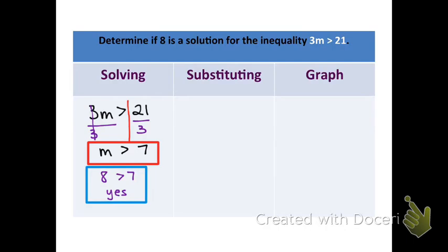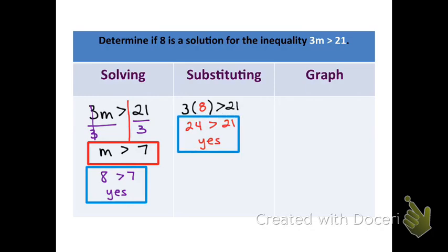The second way is substituting the value 8 directly into the original inequality: 3 times 8 is 24 — is 24 greater than 21? Yes, it is. Both methods give the same answer, which confirms they should. To graph, draw the line with two hash marks at 0 and 7. Since it's greater than, use an open circle at 7 with the arrow heading right. The value 8 falls in the shaded region, confirming it's correct.